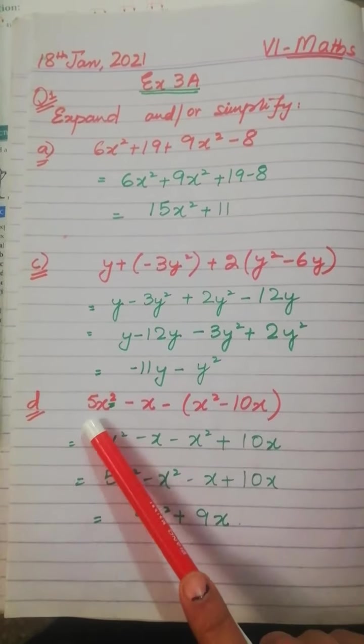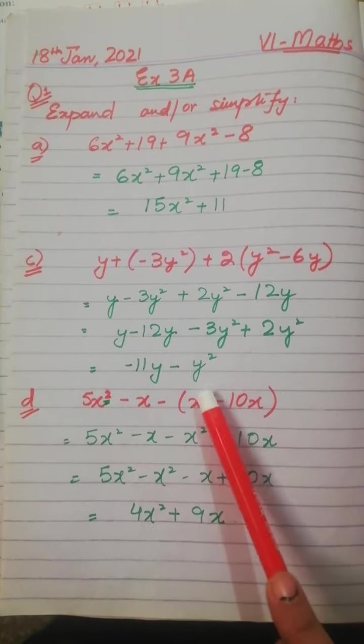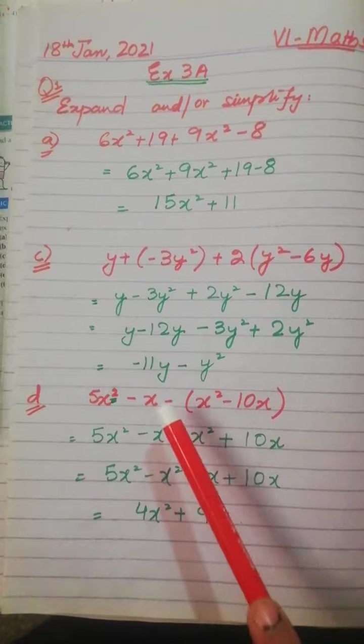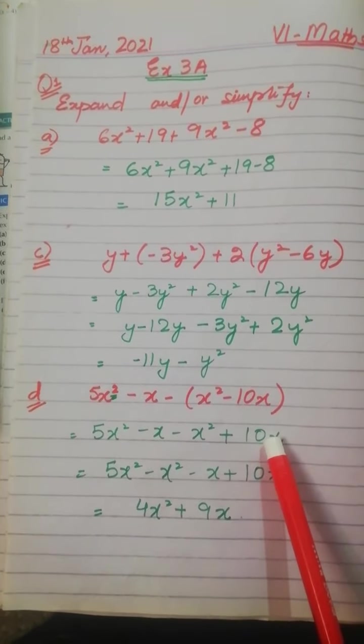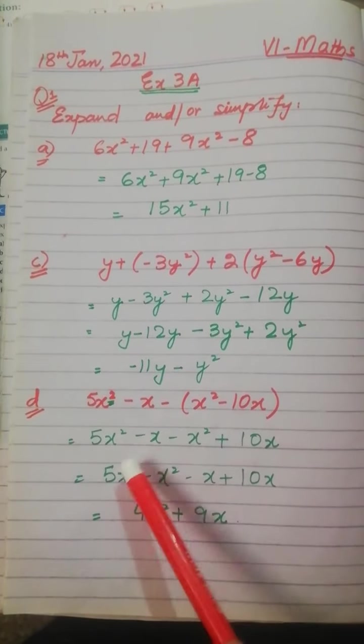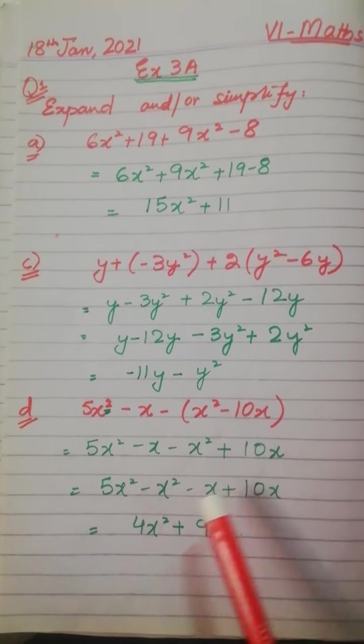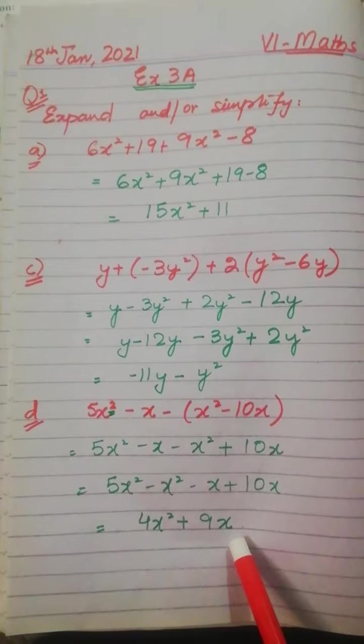Same इसी तरह 5x² minus x minus x² minus 10x. ये minus इस bracket से multiply होगा, यानि कि ये term होजेगी minus x² और minus minus plus 10x. 5x² और x² की terms आपस में solve होगी और x और x की terms आपस में solve होजाएंगे, तो हमारे पास आजएगा 4x² plus 9x.